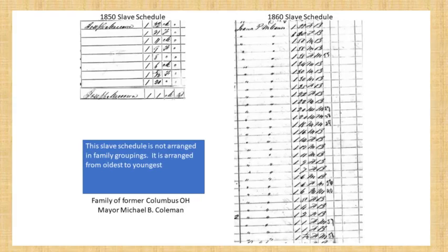For example, this is an 1850 slave schedule for the McCann family up in Kentucky. This slave schedule is not arranged in family groupings, and most of them are not. They're occasionally listed in family groupings, but often they're just arranged from oldest to youngest, or randomly. In this case, it's just a list of slaves by the McCann family from oldest to youngest.